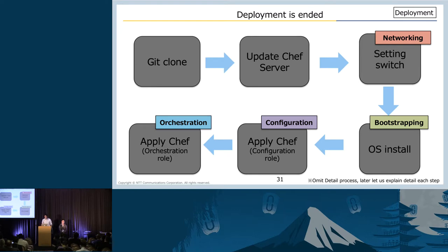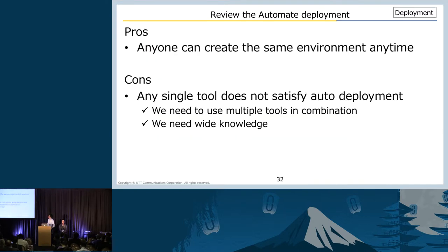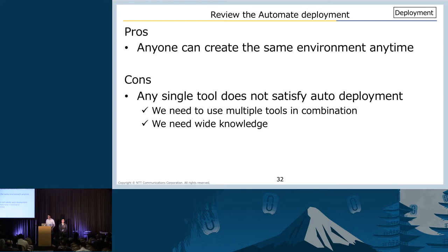Automated deployment flow is complete. Here is a summary of auto-deployment. The auto-deployment system enables anyone to reproduce the same environment anytime. Imagine deploying manually — even an experienced engineer will miss something. But as shown, the auto-deployment system requires several tools, and no single tool is sufficient for automation. So it requires a wide range of knowledge.